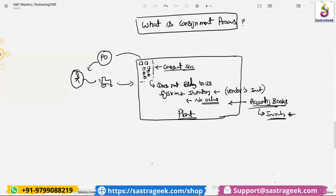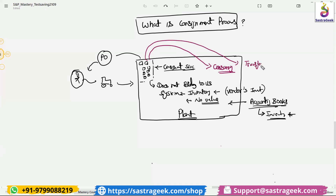We say to the vendor: you can put this material in this space, and whenever it is required, we would be buying or consuming the material from you. We can directly consume it or get it transferred into our location, which can be a production location. When we transfer or consume it, at that time it comes into our books, and at that time only we are liable to pay you.